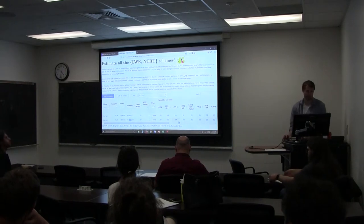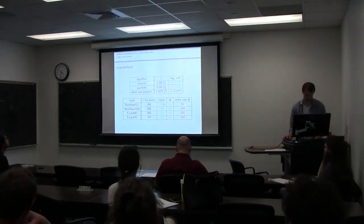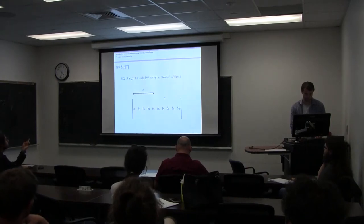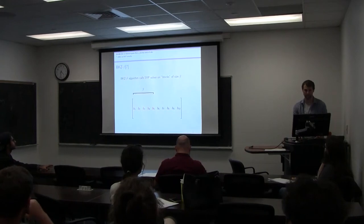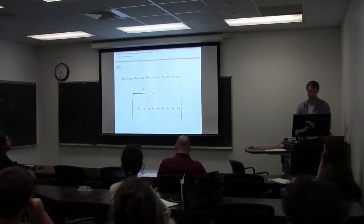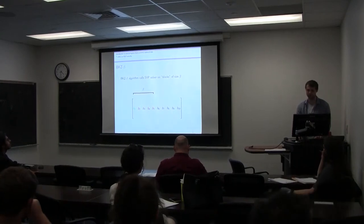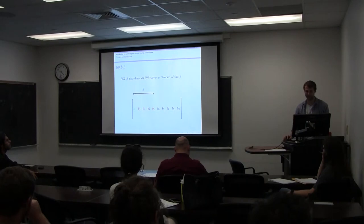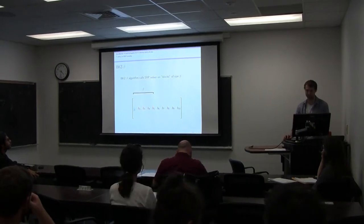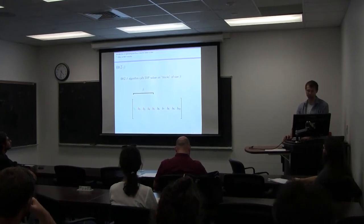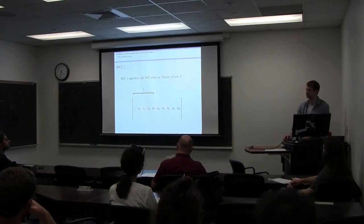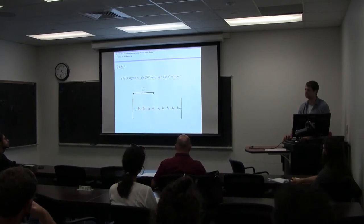Can you go back to the BKZ algorithm? Maybe I'm not completely understanding it, but to me it sort of looks like a sorting algorithm. Is that what it is? No — the sorting comes in through a process called size reduction, but really we're just finding and replacing: we replace B1 with the shortest vector. We're really just looking through this lattice, finding a short vector, and then that's what we replace B1 by. And then we move on to the next block.